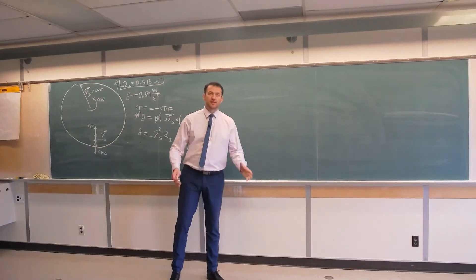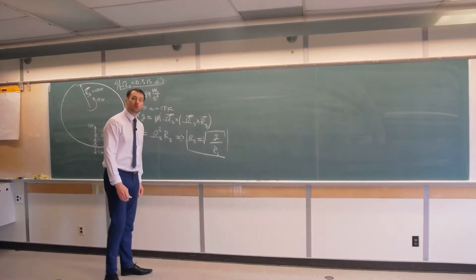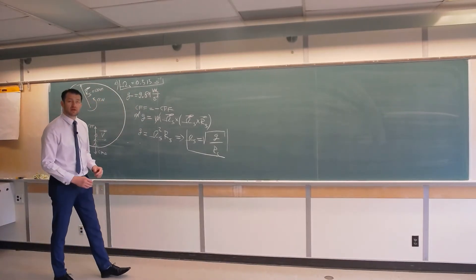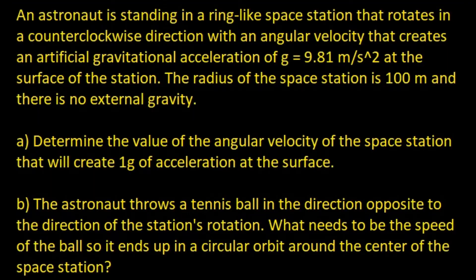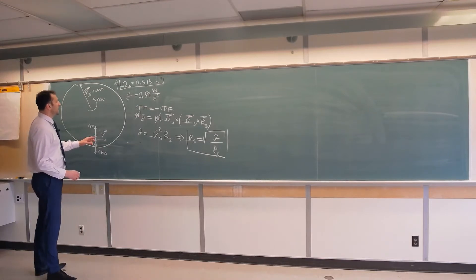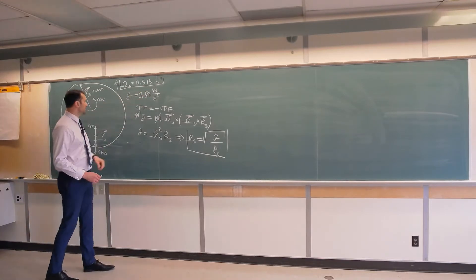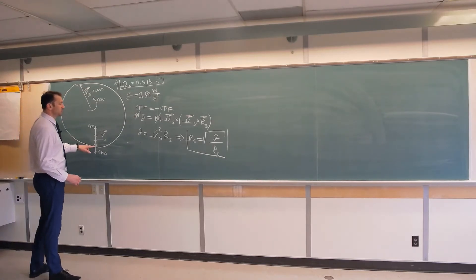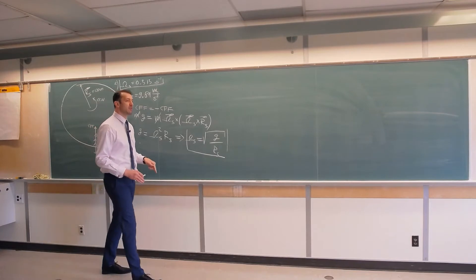Hello, George Romanic here. Let's solve part 2 of the problem that I introduced in the previous video. You can see the text of the problem on your screens. In part A we had to find the angular velocity of this space station so that this astronaut has the same feeling of gravity that he would have on planet Earth.